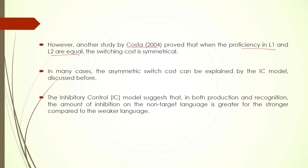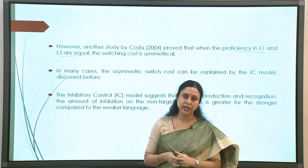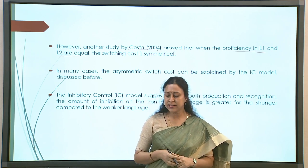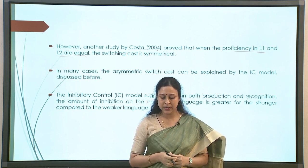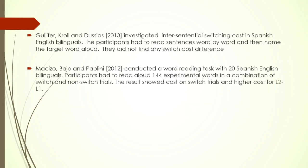Because of varied findings — including the absence of switch cost, which is more common in comprehension studies — there have been attempts to explain what is happening. One explanatory model is the IC model, the Inhibitory Control model, which talks about control mechanisms. This model suggests that in both production and comprehension, the amount of inhibition on the non-target language is greater for the stronger language compared to the weaker one, explaining why L1 is difficult to bring back.